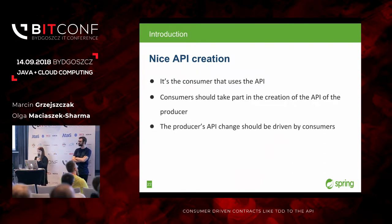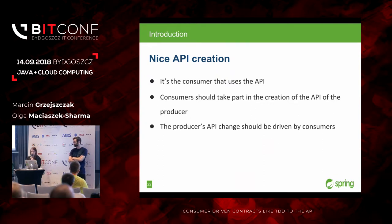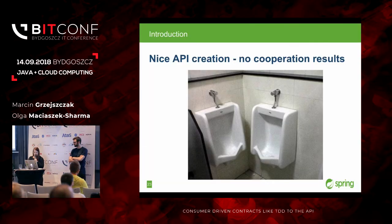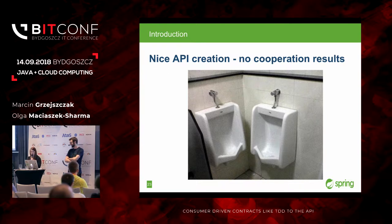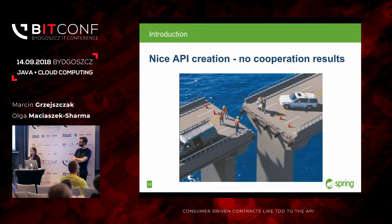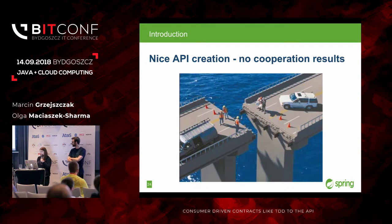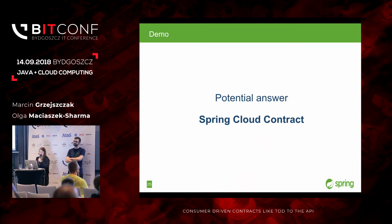Consumers should take part in the creation of the API, at least within the same organization. The changes should be driven by consumers, and this collaboration is very important — otherwise strange things happen: unit tests pass but integration tests are stubbed, or you have the right messaging channel but one field was different. We want to show a potential answer to this, which is Spring Cloud Contract, and it addresses both of these problems.